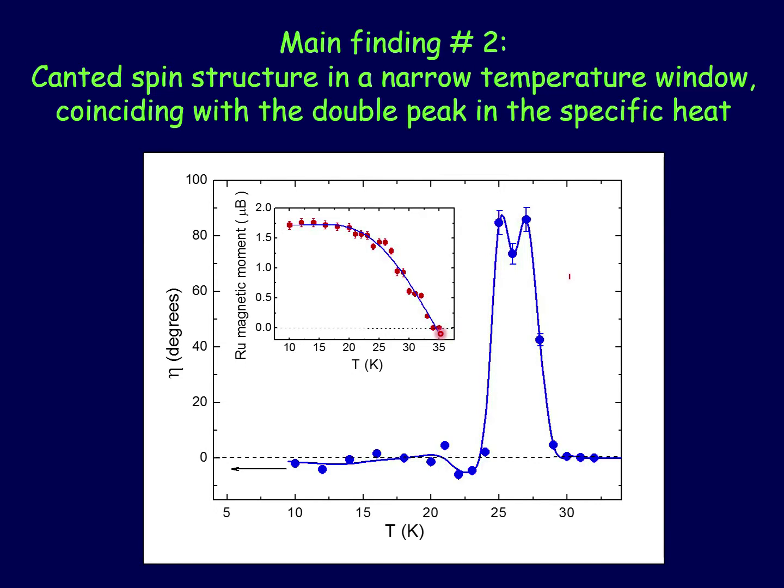If we plot the ruthenium magnetic moment as a function of temperature, we find a very smooth variation which reinforces the fact that the choice of propagation vector is indeed correct.